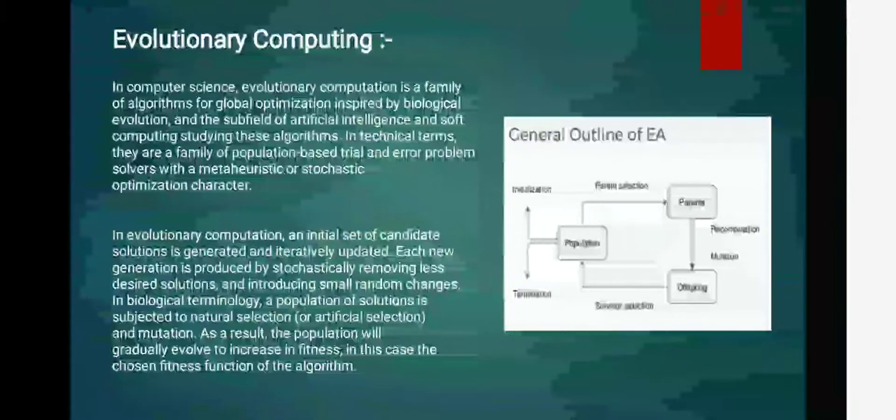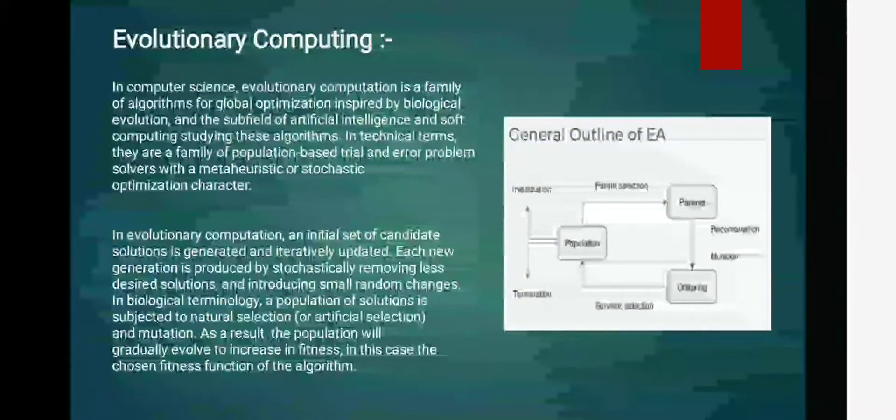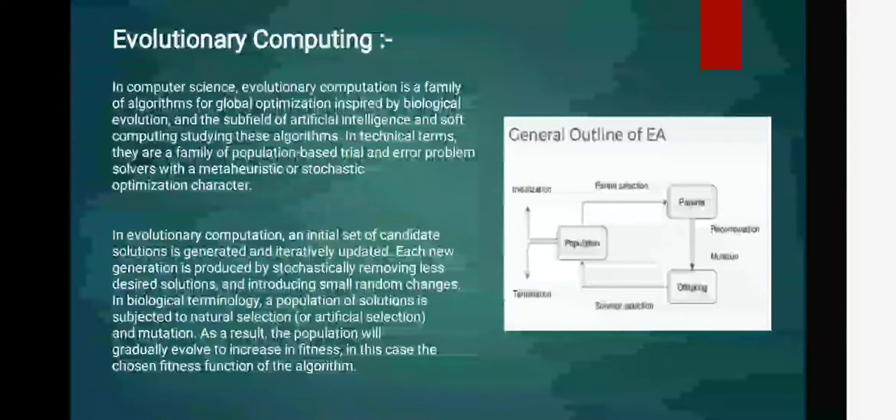Now you must have got this basic idea behind the evolutionary computing. Here in slides I have provided information in more technical part, like technical terms are there as a family of population-based trial and error problem solver. Why we are calling it as a trial and error problem solver? Because here we will be having multiple solutions and which one is the most optimal that we have to select.